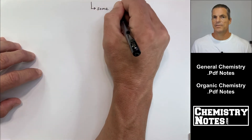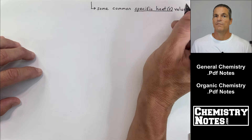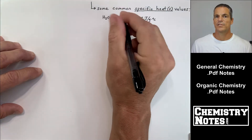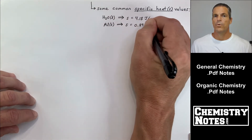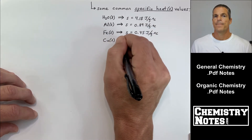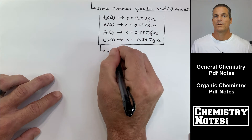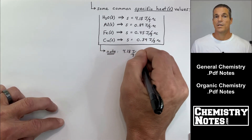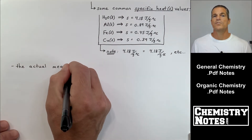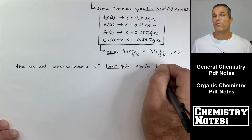Some common specific heat capacity values show just how good a coolant water is. Liquid water has a specific heat capacity of 4.18 joules per gram per degree Celsius — meaning it takes 4.18 joules to raise one gram of water by one degree Celsius. By comparison, aluminum, iron, and copper are all under one joule per gram per Celsius, some well under one. Since one degree Celsius equals one degree Kelvin, 4.18 J/g/°C is the same as 4.18 J/g/K.